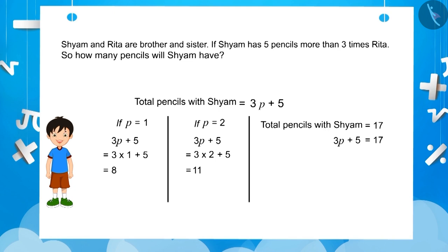This is an equation whose expression on the left side, 3P plus 5, represents the total pencils with Shyam. 17 on the right side represents the total number of pencils. The equal to sign here shows that the values on both sides are equal.